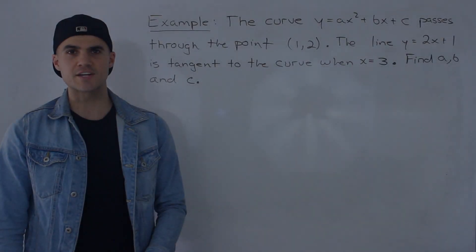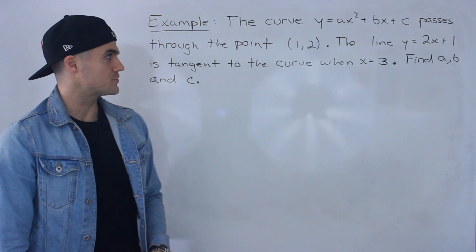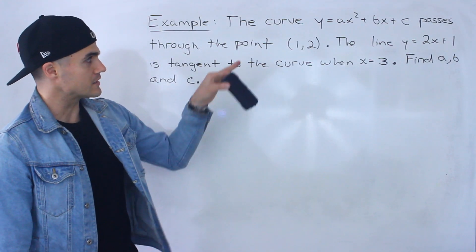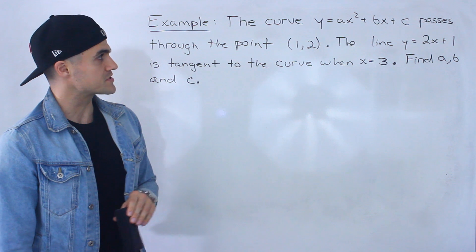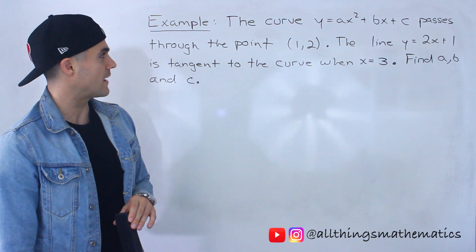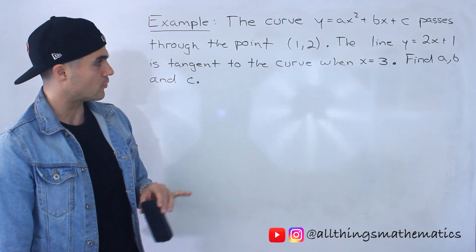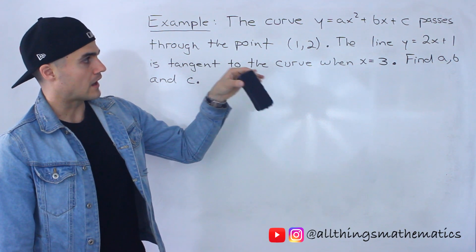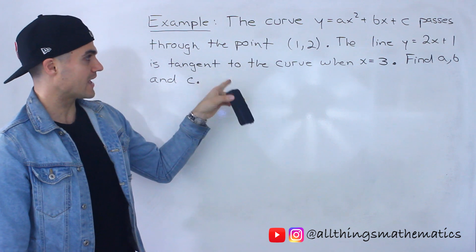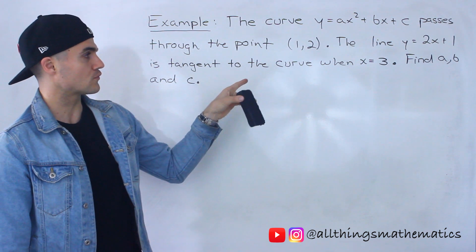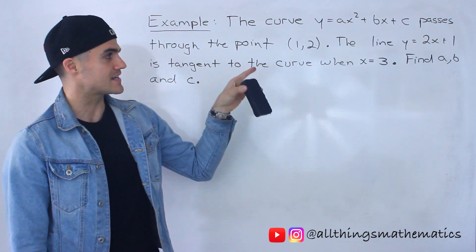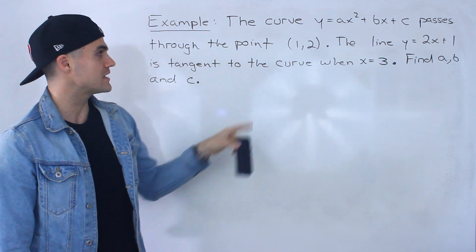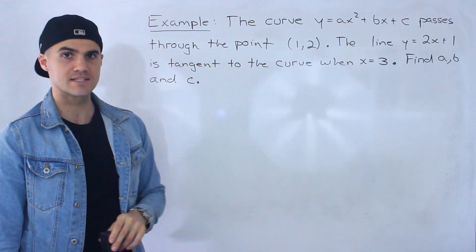What's up guys? Welcome back. Patrick here, moving on to the next example. So the curve y equals ax squared plus bx plus c passes through the point (1, 2). Then the line y equals 2x plus 1 is tangent to the curve when x is equal to 3. We've got to find a, b, and c.